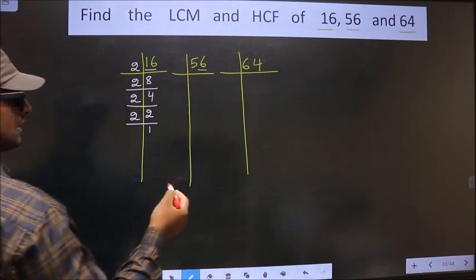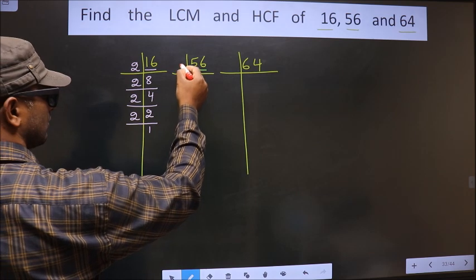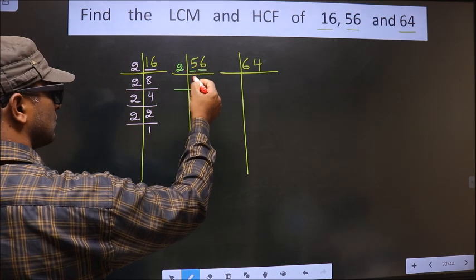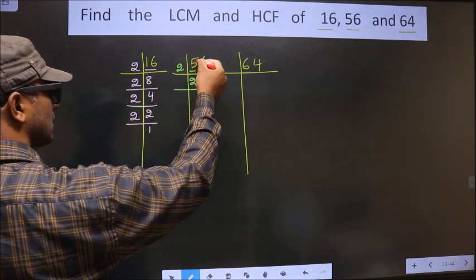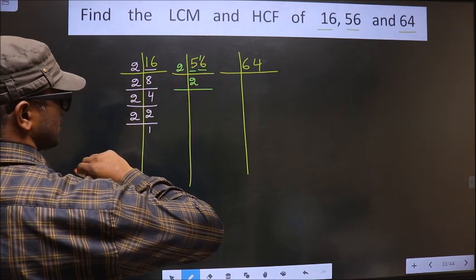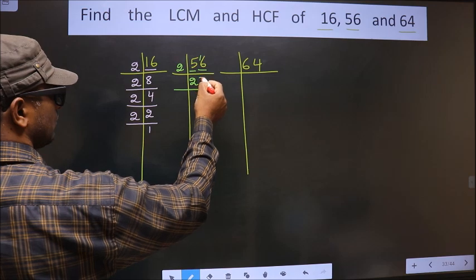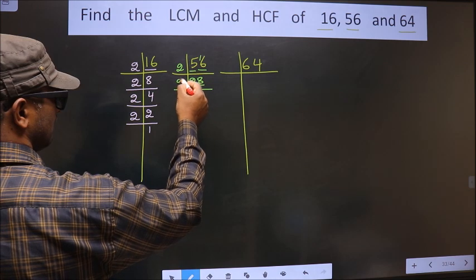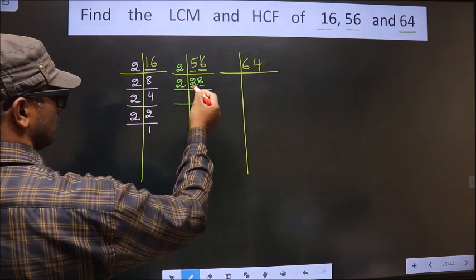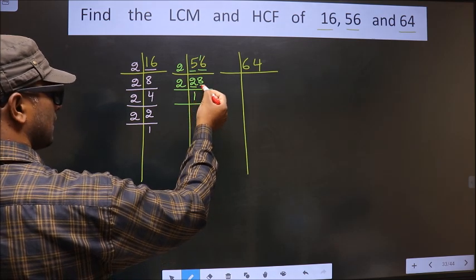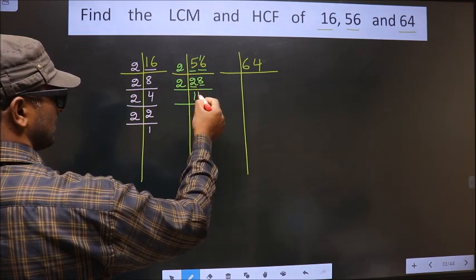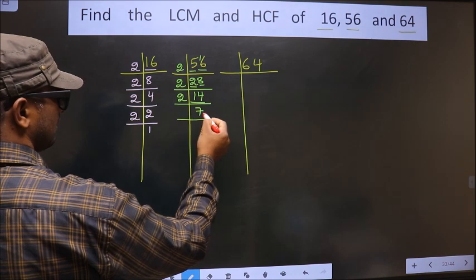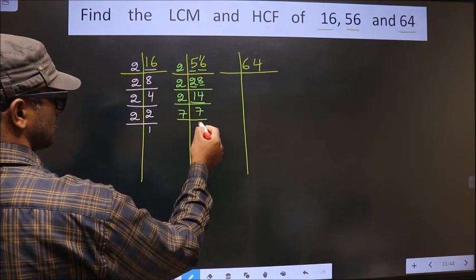Now for 56 — the last digit is 6, which is even, so we take 2 here. We divide: 2 times 28 is 56. Next, 2 times 14 is 28. Here we have 14: 2 times 7 is 14. Now 7 is the prime number, so 7 times 1 is 7. So the prime factorization of 56 is 2 × 2 × 2 × 7.